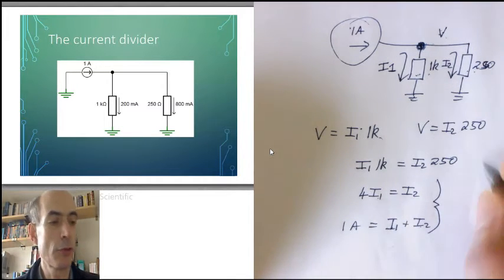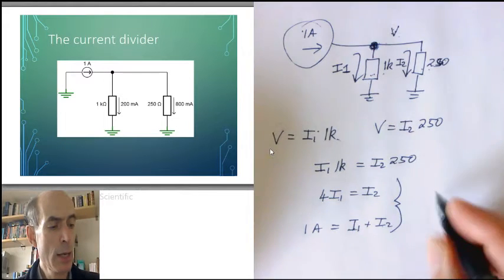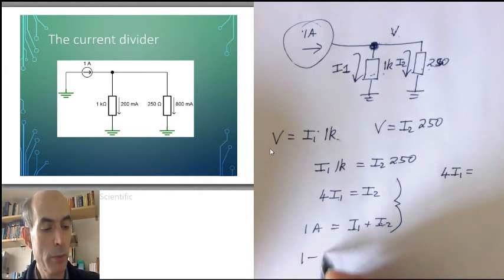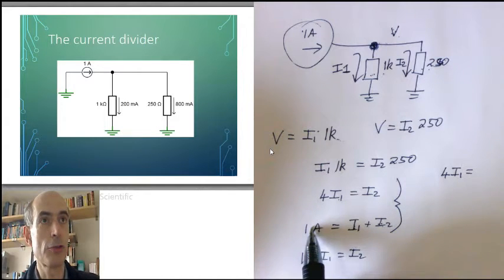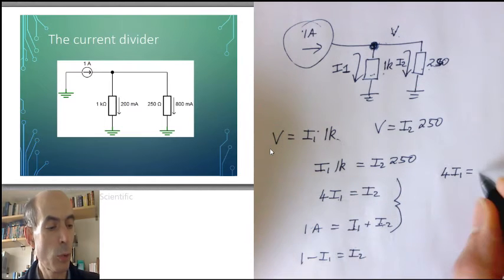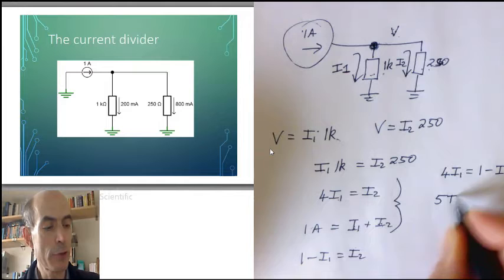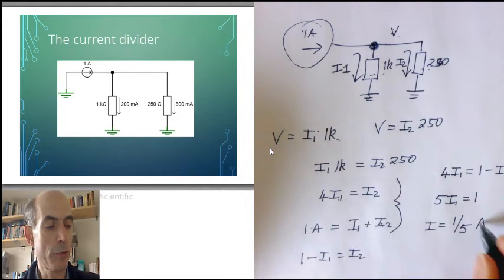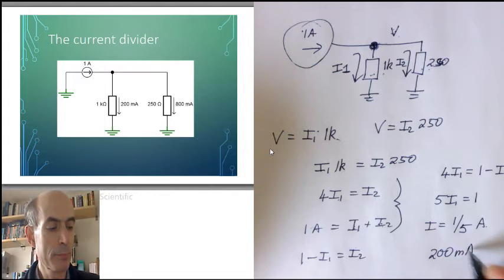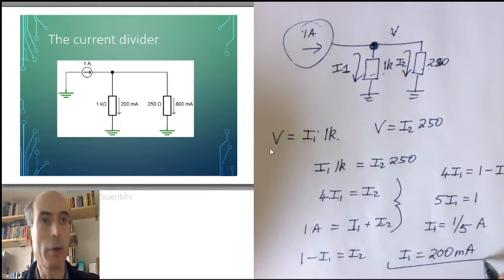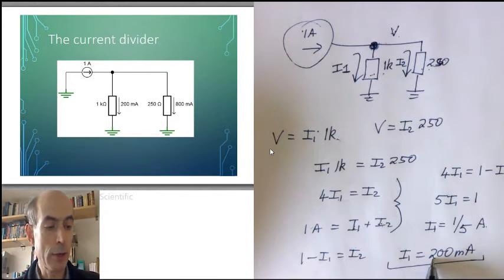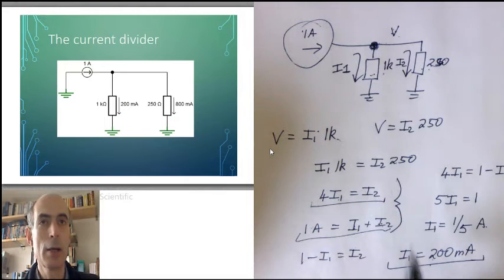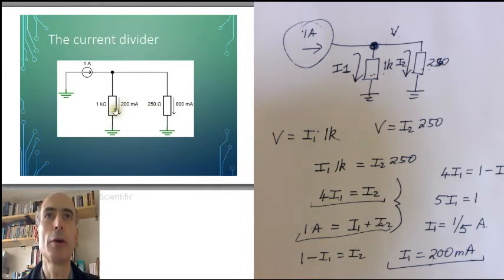All we have to do is solve those two equations. Simplest way to do that, probably to write something like 4I1 equals I2, but I2 would be 1 minus I1, just taking I1 across to this side of the equation. So 4I1 would equal 1 minus I1. Therefore, 5 times I1 must be equal to 1, or I1 equals 1 fifth. 1 fifth of an amp is 200 milliamps. That's I1, and once we've got I1, it's fairly simple. Just to note from either of these two equations that I2 must be 800 milliamps. And we've solved the problem. We know how much current is flowing down each of these two resistors.